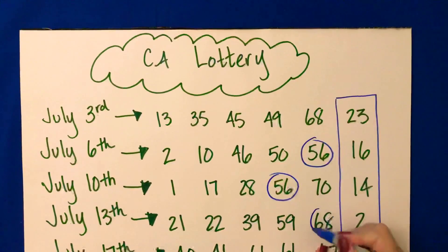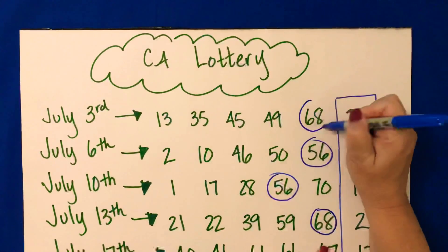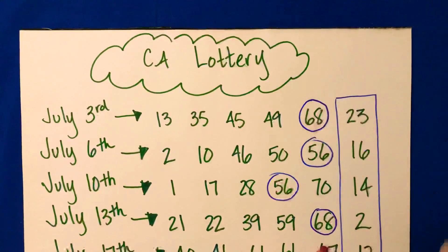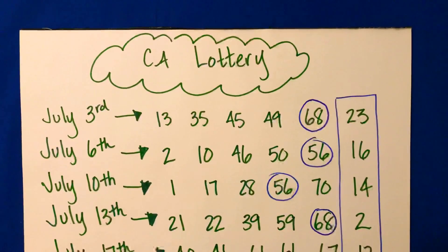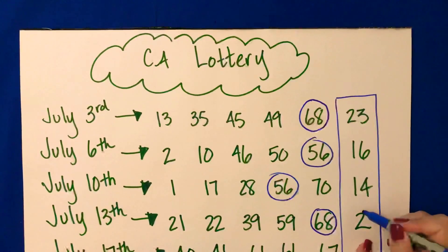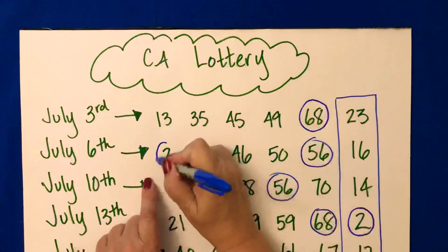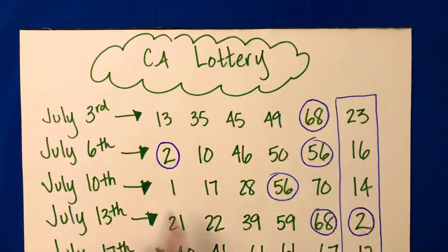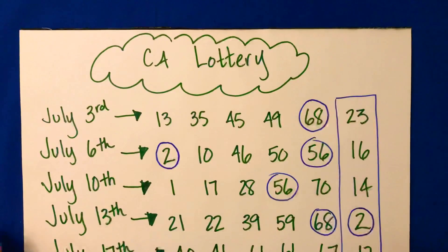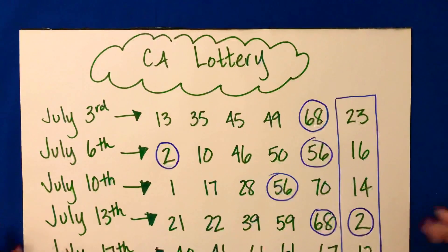And then again down here, I noticed the number 68. That happened during the week of July 3rd as well as the week of July 13th. And then also the number 2 — this had also repeated from the week of July 6th. So if I'm trying to play the game and I want to choose my numbers, I might pick one of these three numbers because they're obviously happening again and again as we look at the winning numbers.